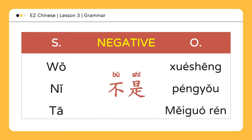The negative form is also very direct: subject plus 不是 plus object. 我不是学生。 I am not a student. 你不是朋友。 You are not a friend. 他不是美国人。 He/she is not an American.